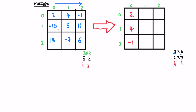Continuing: 5 is at (1,1) and gets placed at (1,1). 11 is at (1,2) and goes to (2,1). The element at (2,0) goes to (0,2). -7 is at (2,1) and gets placed at (1,2). Finally, 6 is at (2,2) and goes to (2,2). We've reached the end of the matrix, so this is our final transpose matrix, which is returned as the output.